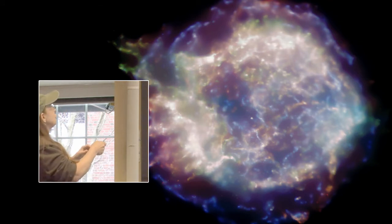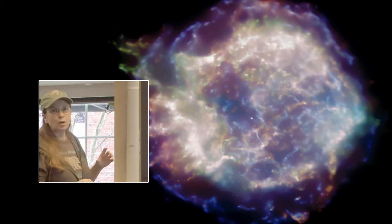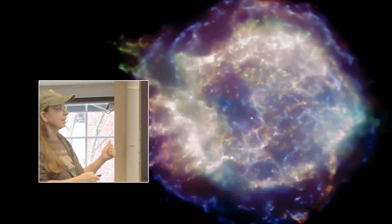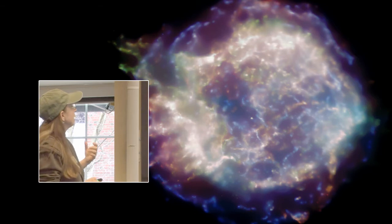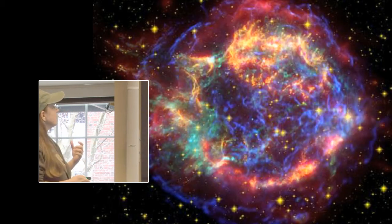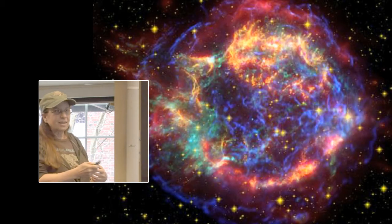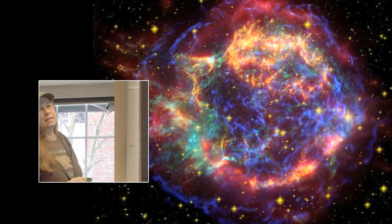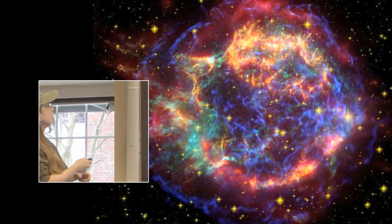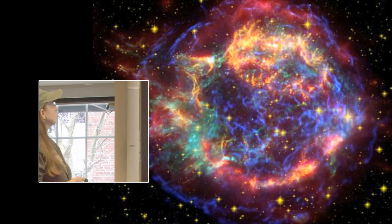This is a composite of the Cas A remnant. The blue is Chandra X-ray, the shock wave. The green is Chandra, that's the iron. And the red is from Spitzer, that's infrared. And the little bit of yellow and orange stuff, that's Hubble, the optical part.